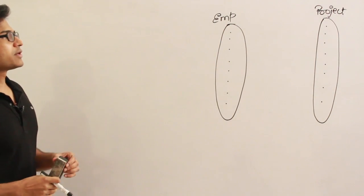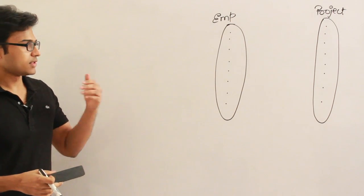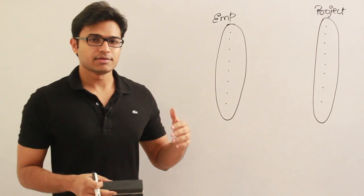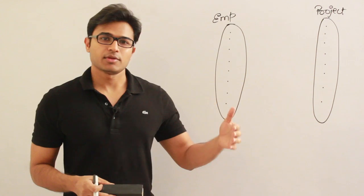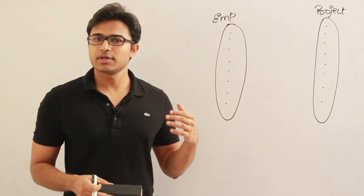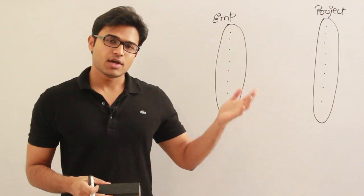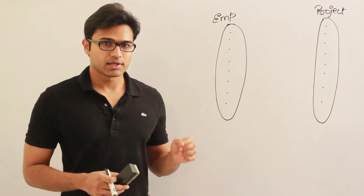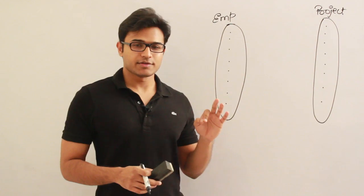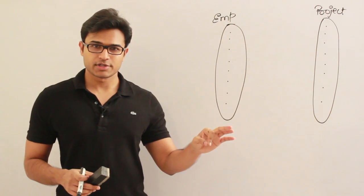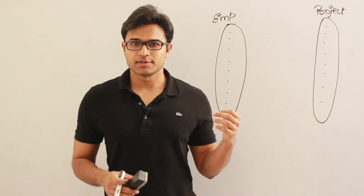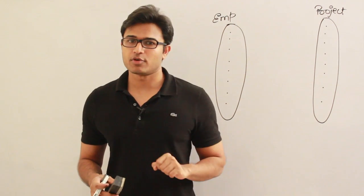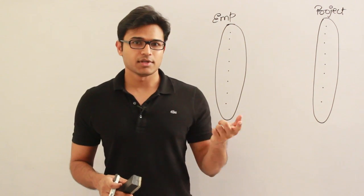According to the specification and requirement analysis, every employee is supposed to work on at least one project, and an employee can work on many projects. Similarly, every project is supposed to have many employees, and it is supposed to have at least one employee. So both sides have 'at least one' and 'many.'